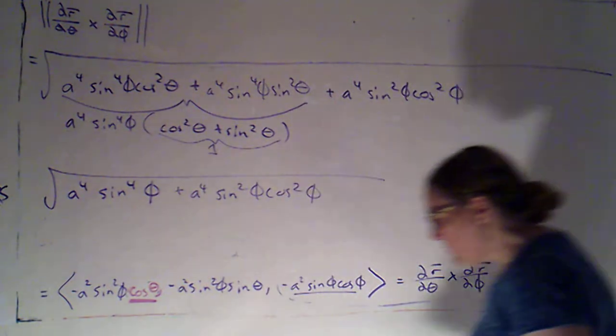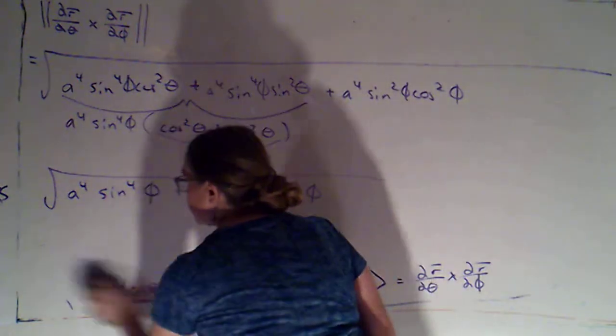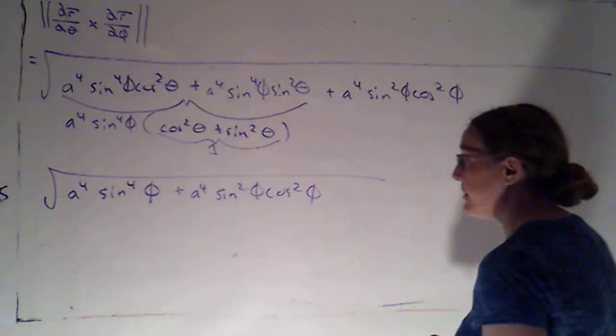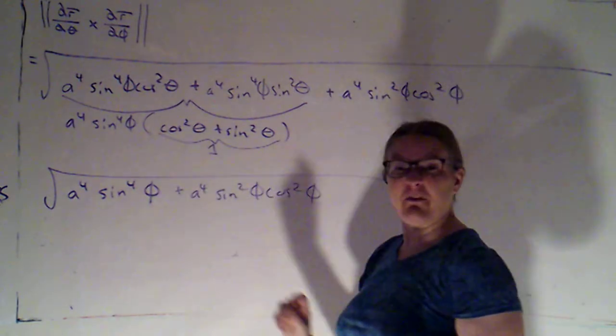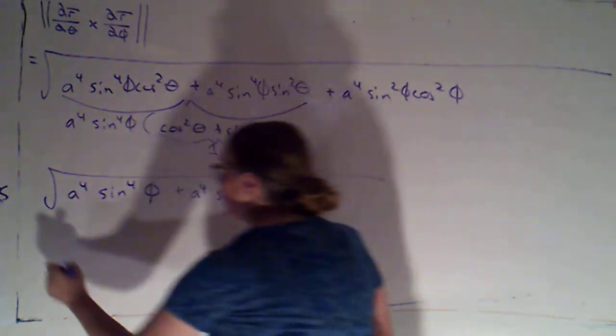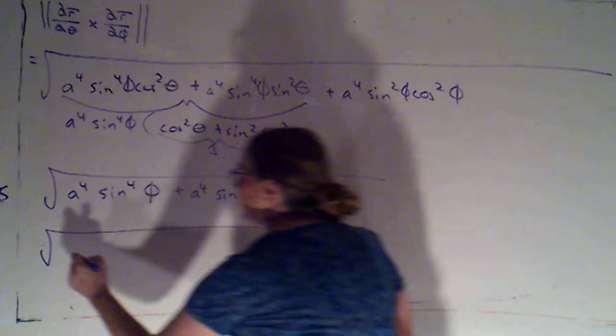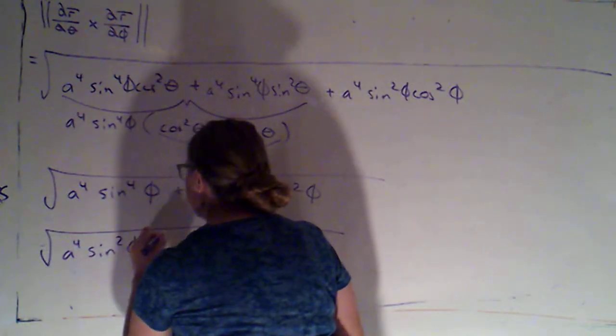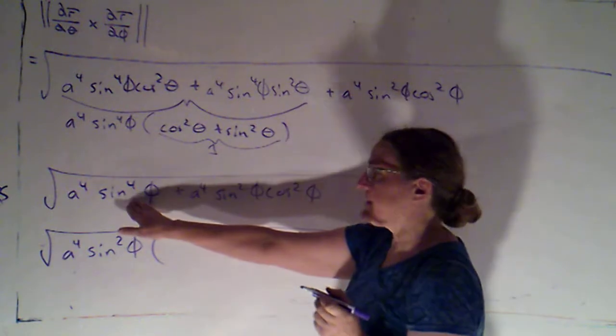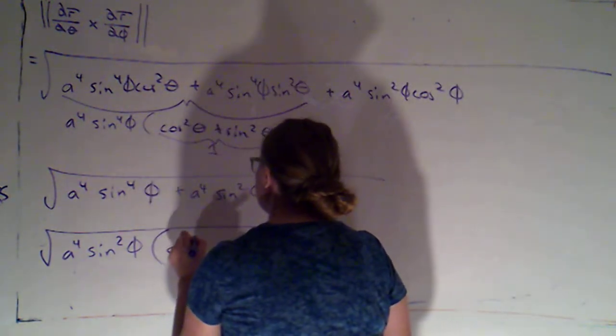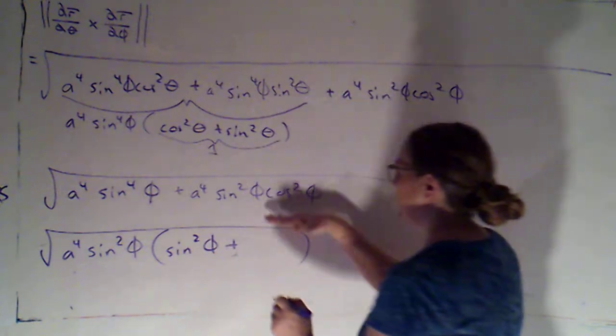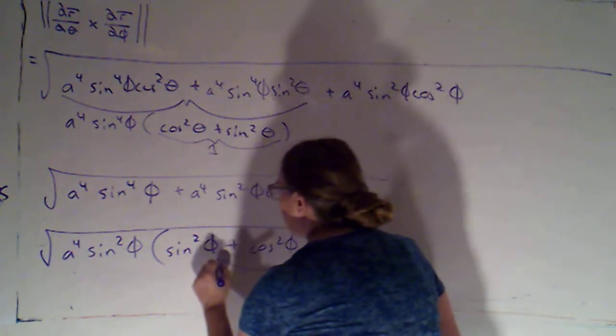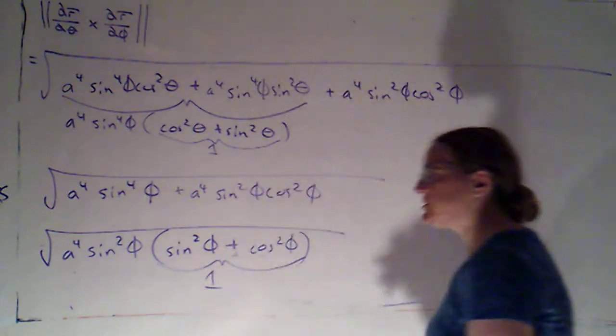So now I can factor something out of those two terms because both of them contain not only an a to the fourth but also at least two factors of sine phi. So I can factor out a to the fourth times sine squared phi. What's left here would be the other two factors of sine phi, and what's left here is cosine squared phi. And oh my goodness, that's just one.